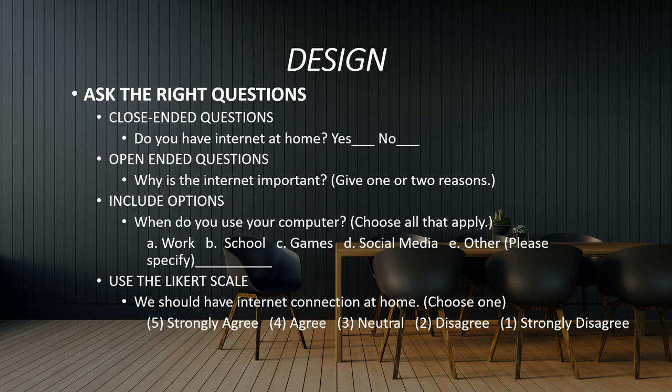For example: We should have internet connection at home. Choose 1 to 5. 5 - Strongly agree. 4 - Agree. 3 - Neutral. 2 - Disagree. 1 - Strongly disagree.